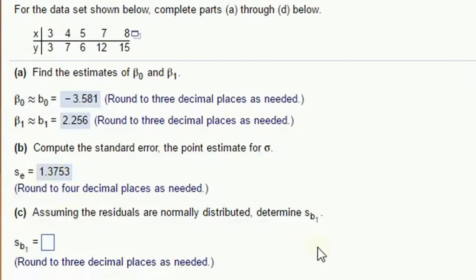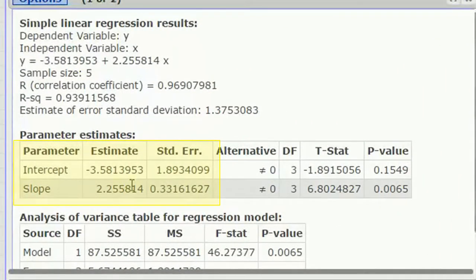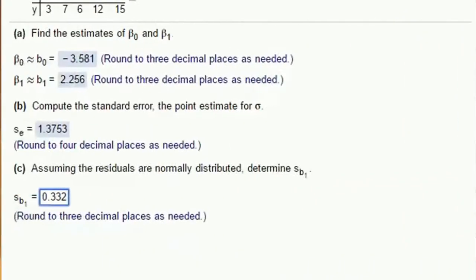If the residuals are normally distributed, so the standard error of b1, for each of these estimates, we're given a standard error right next to it. So for the slope, the standard error is right here. It's 0.33, but I have to round it up to 0.332 to get three decimal places. The standard error is what we're asked for. When I say s with a little subscript b1, remember b1 is the slope, so the standard error of b1 is that number.